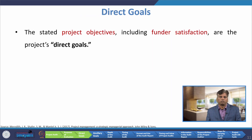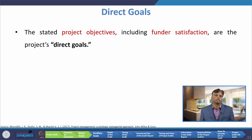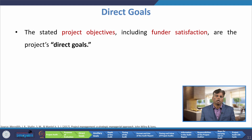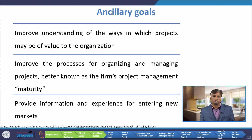We will now discuss about some of the direct goals. Whatever the project objectives that will satisfy the funder satisfaction are called direct goals. We have to audit these direct goals. Apart from that, we also have to consider some ancillary goals.